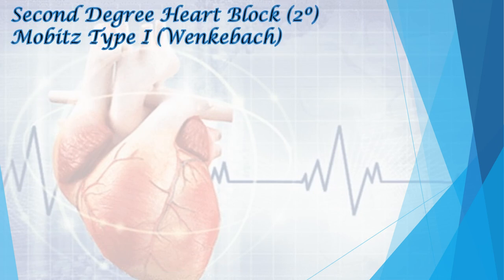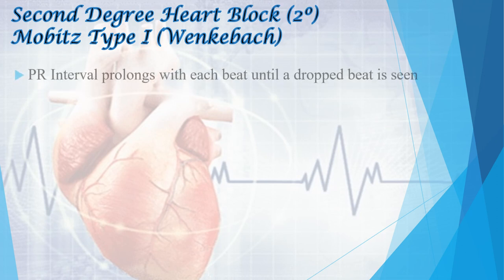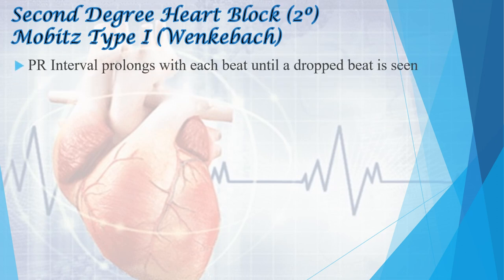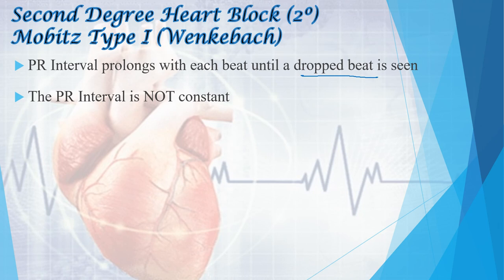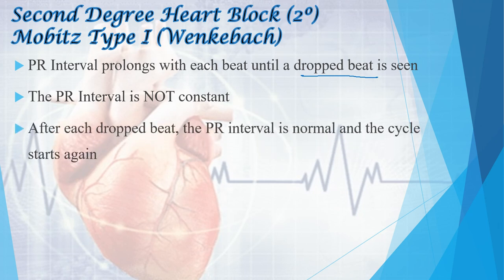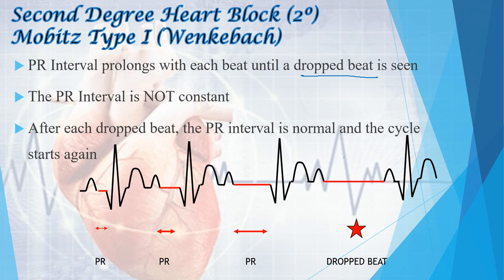In Mobitz type 1, the ECG shows the PR interval prolonging with each beat until a dropped beat occurs. After each dropped beat, the PR interval resets to normal and the cycle starts again. In the graphical ECG representation, you can see progressively lengthening PR intervals — first, second, third — followed by a missing QRS complex (dropped beat). This is Mobitz type 1 (Wenckebach).